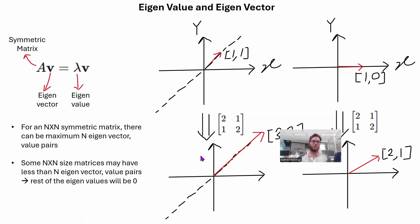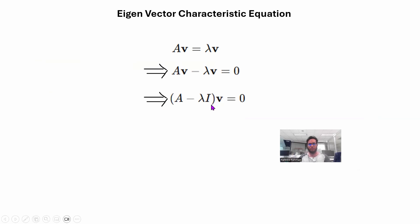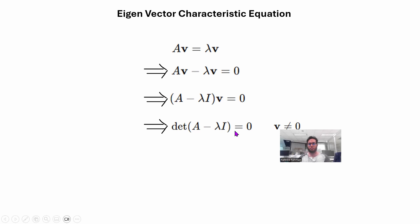To calculate eigenvectors and eigenvalues, we use the eigenvector characteristic equation. Starting from A·v = λ·v, we rearrange to get (A − λI)·v = 0. Since v is a non-zero eigenvector, the matrix (A − λI) must be zero — meaning its determinant equals zero. So the characteristic equation is: det(A − λI) = 0. These two equations — (A − λI)·v = 0 and det(A − λI) = 0 — are what we use to calculate the eigenvector and eigenvalue pairs.